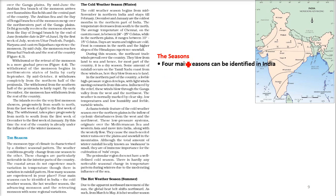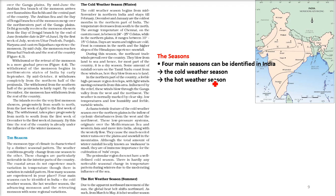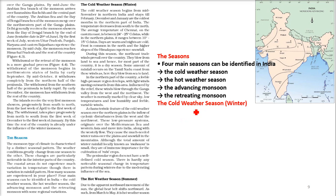Now coming to the seasons — there are four main seasons which can be identified in India. First is the cold weather season, then we have the hot weather season, then we have the advancing monsoon, and then we have the retreating monsoon. So what is the cold weather season? It is winter.